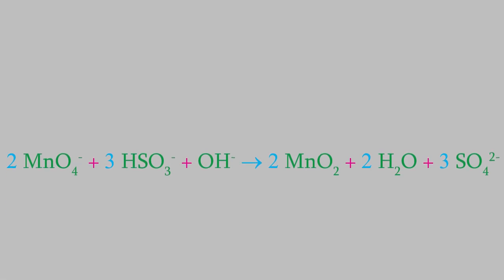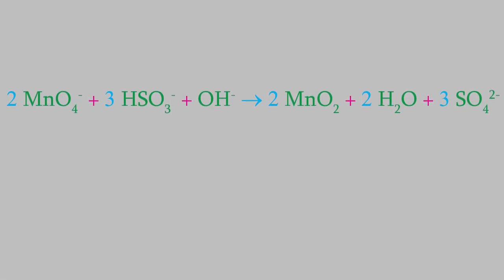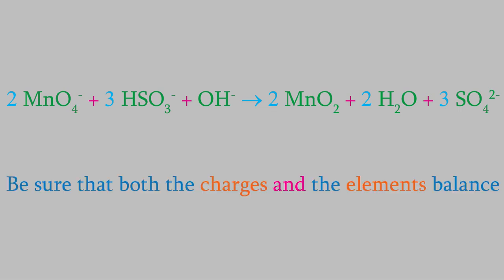That was a lot of work, so to make sure we didn't make any mistakes, we should check to make sure that both the charges and the elements are balanced. I'll do the charges first. There are two permanganate ions, three bisulfites, and a hydroxide on the left, for a total charge of minus six on the left side. On the right, there are two neutral manganese dioxides, two water molecules, and three sulfate ions, for a total charge of minus six on the right, which is exactly what we had on the other side.